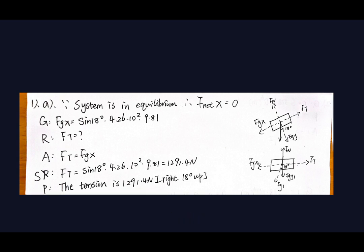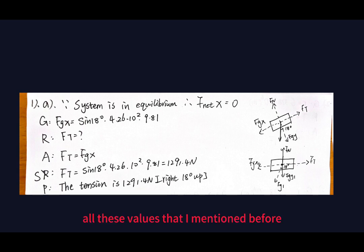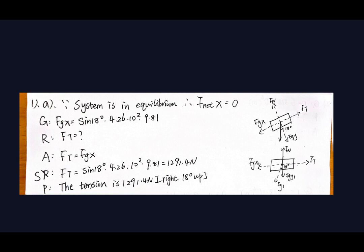In this case, the tension force ft should equal fgx1 because the system is in equilibrium. By substituting the values, ft equals all those values mentioned, and after calculation the answer is 1291.4 Newtons.